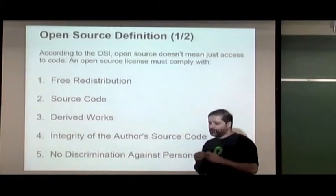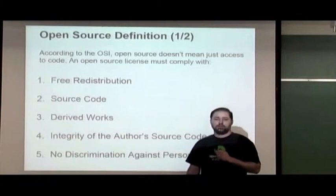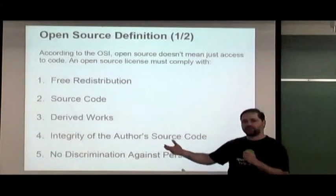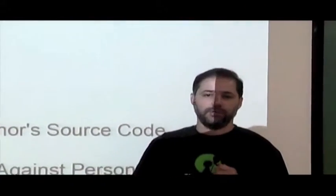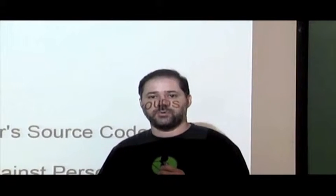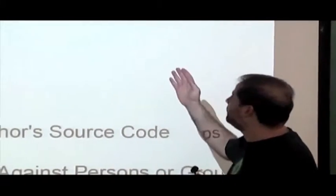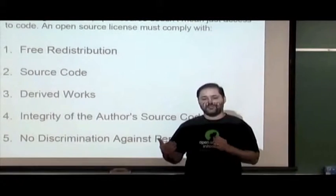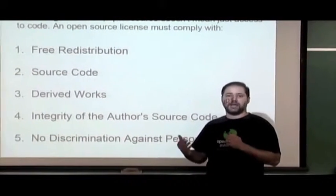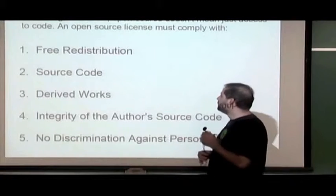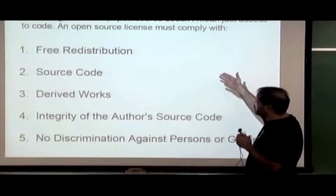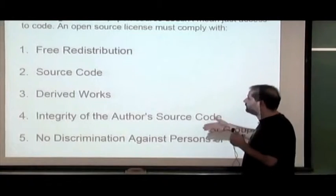Talking about the Open Source definition: when you get a piece of software, it has a license that tells you what you can or cannot do with it. How do you know if a particular license actually promotes the freedoms we're talking about? That's why the Open Source definition was created — it's a set of important criteria that a software license must meet to be considered an open source license.